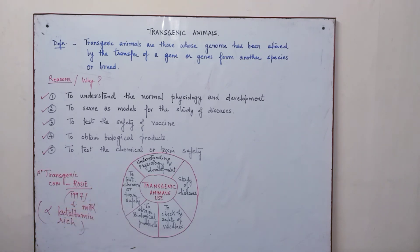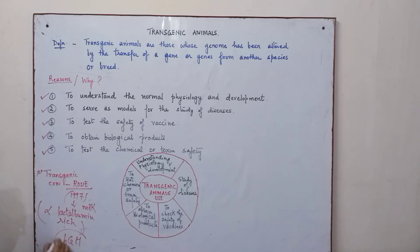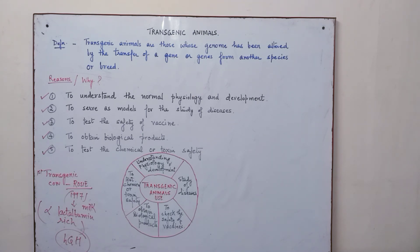To summarize, transgenic animals are used for five purposes: understanding physiology and development, studying diseases, checking vaccine safety, obtaining biological products, and testing chemical or toxin safety. Examples of transgenic animals include a transgenic mouse with the gene for human growth hormone, the cow Rosie, and a transgenic female sheep with the gene for clotting Factor 9 in its milk.